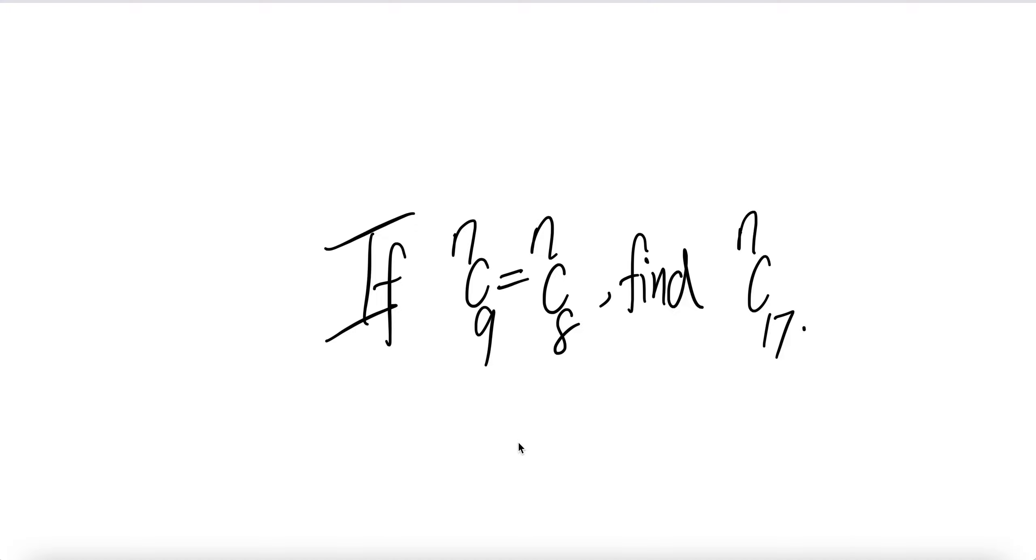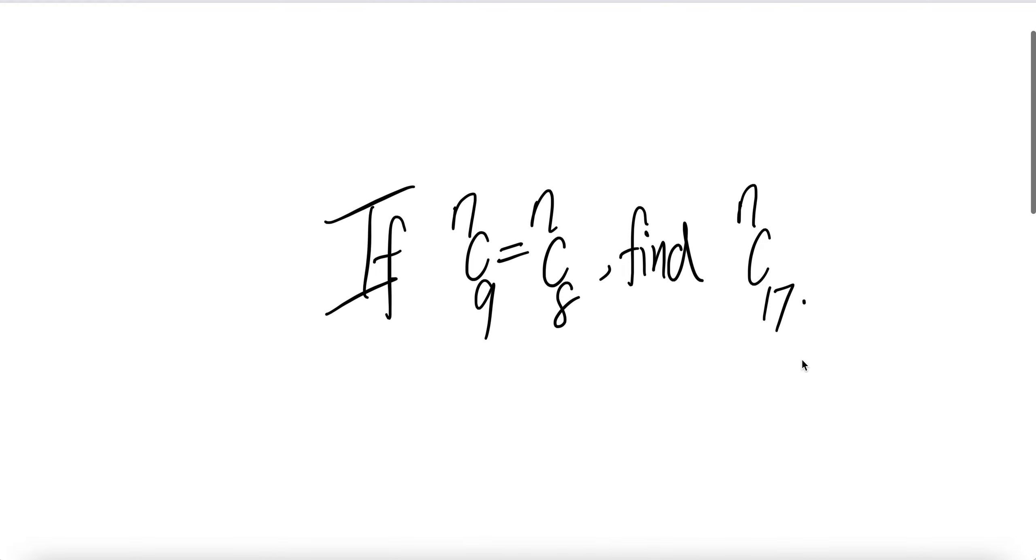Once n is found, we can plug the n here to get the n choose 17. So that's the plan of attack.